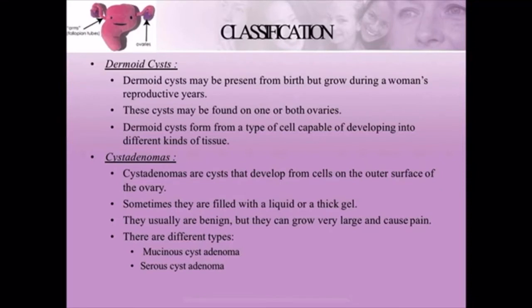The next type is dermoid cysts. Dermoid cysts can be present from the time of birth but grow during a woman's reproductive years. As the woman ages into her reproductive years, the dermoid cyst increases in size. These cysts can be found on one or both ovaries. Dermoid cysts form from a type of cell capable of developing into different kinds of tissue.